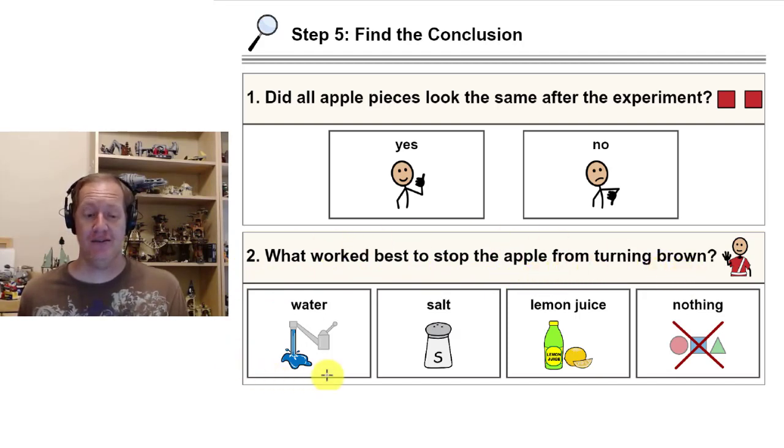What worked best to stop the apple from turning brown? Did the water work the best? Did the salt work the best? Did the lemon juice work the best? Or did nothing work the best? Well, that's kind of up to you. What did you think worked the best?